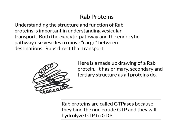As proteins, they're made up with a primary structure, secondary structure, and tertiary structure. I've drawn a picture here with some alpha helices and beta sheets. This is not what a real RAB protein looks like, but you can imagine it's just a protein that has tertiary structure. We're going to talk about how that structure changes and leads to its functions.